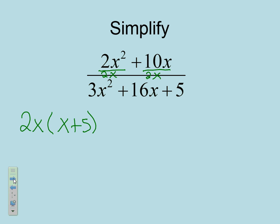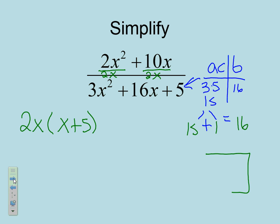Now, on the bottom, we have a trinomial. So, I'm going to have to use AC method. So, if I use AC method on this one right here. A times C has to add up to B. 3 times 5. So, I have 15. The factors of 15 that add up to 16 are 15 and 1. So, if I plug this all into my box.